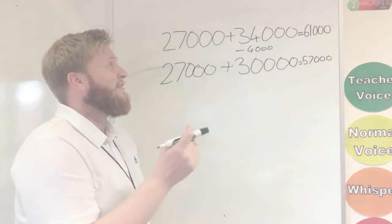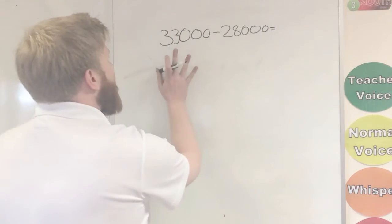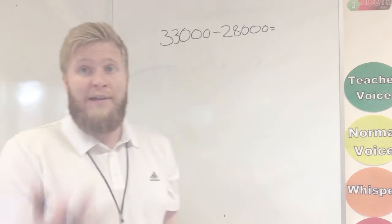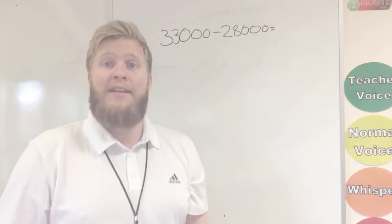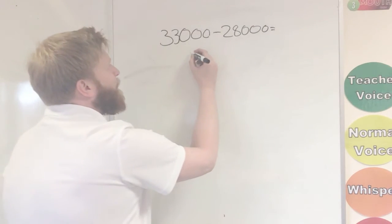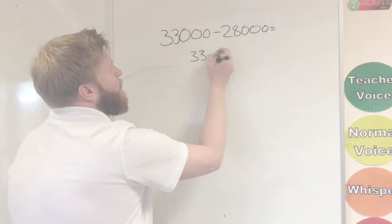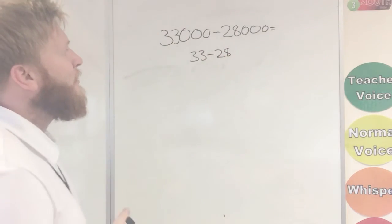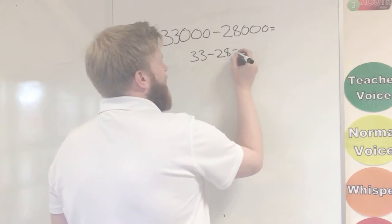Now I'm going to have a look at a couple of ways, using the same techniques, but doing it with a takeaway. So now I've got 33,000, take away 28,000. And I'm going to do it in the three different ways I've looked at, but I'm going to do it for the takeaway now. So, first way, we can take our zeros off, because we've got the same amount of zeros. 33, take away 28.